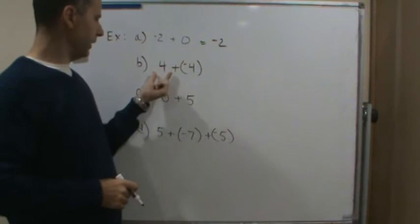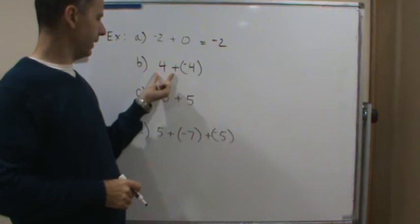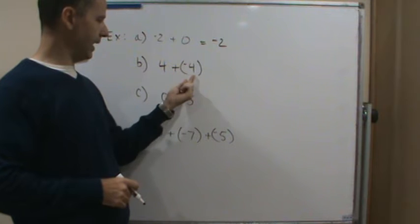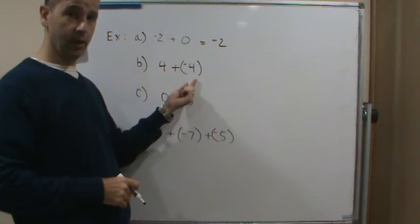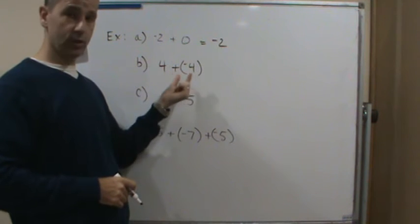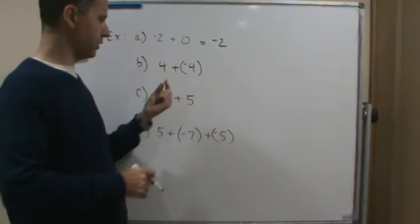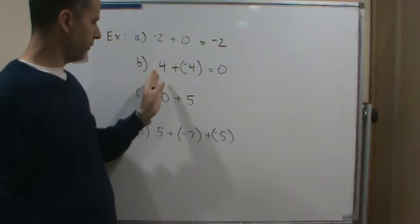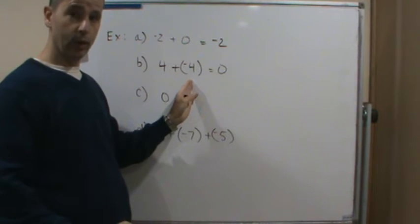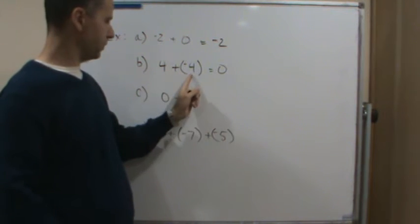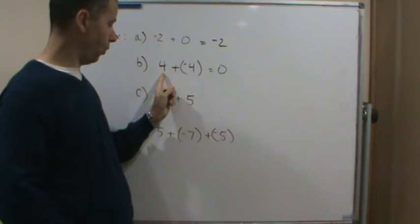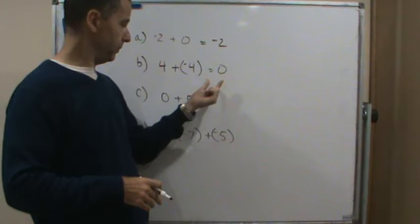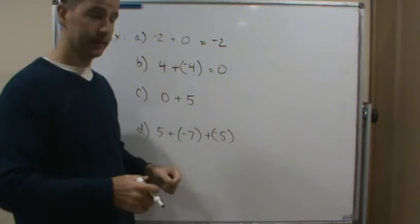So now this one here is 4 + (-4). Remember, this is an additive inverse of each other. We know that additive inverses, when you add the additive inverse, they go to 0. But to see it, think about it. We've got opposite signs, right? So you take the absolute value of both, which is 4 and 4. You subtract them. Well, what did you get when you subtract them? 0. That's it.